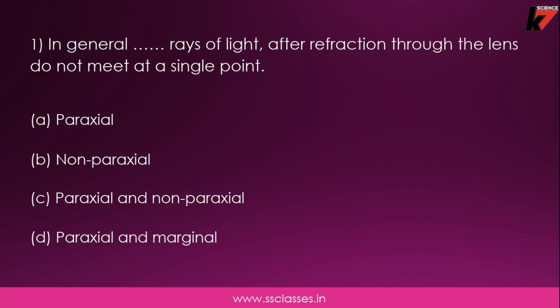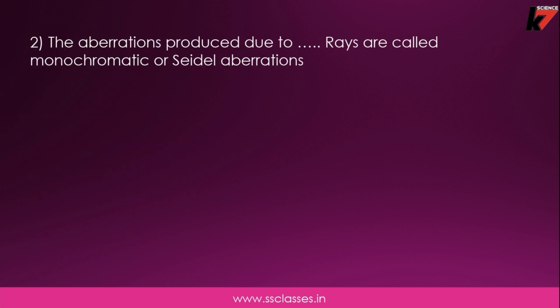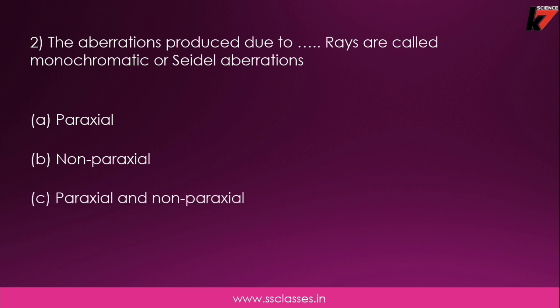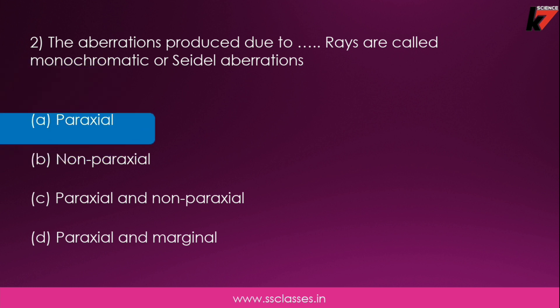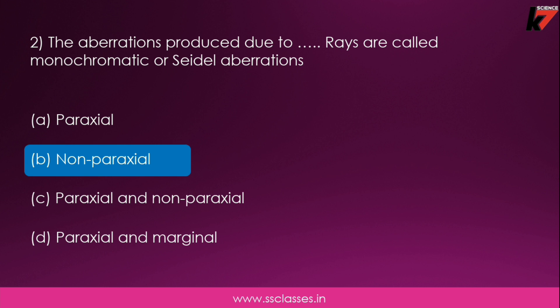You have to remember which rays are non-paraxial. Second question: the aberration produced due to which rays is called monochromatic or saddle aberrations? Options are paraxial, non-paraxial, paraxial and non-paraxial, or paraxial and marginal. The answer is non-paraxial rays — due to non-paraxial rays, the aberrations produced are called monochromatic or saddle aberrations.